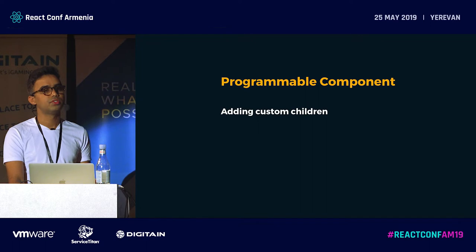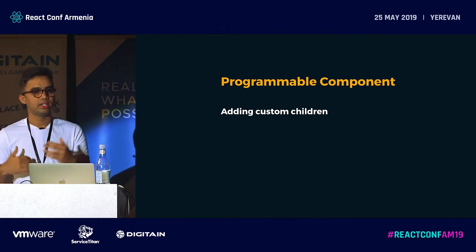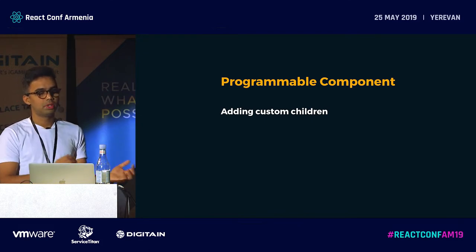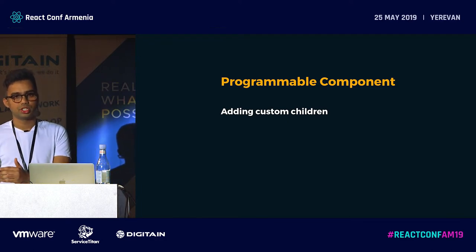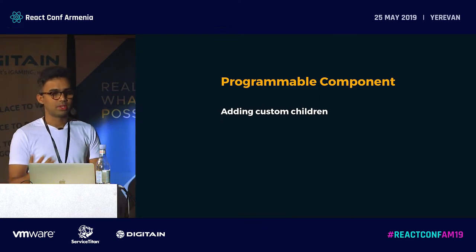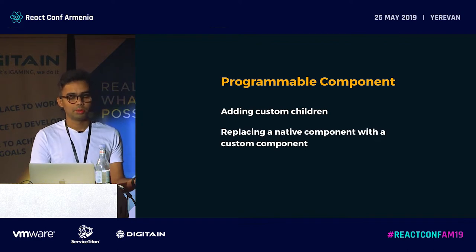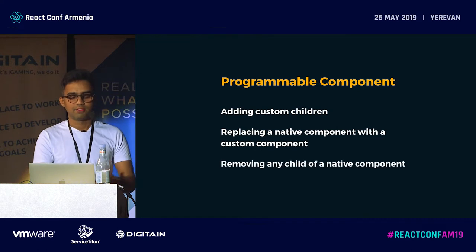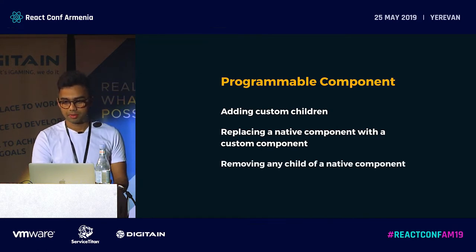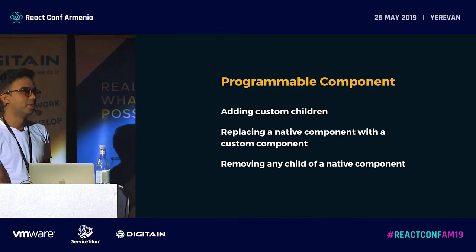There are three main actions you can perform on programmable components. First, adding custom children — at any given point in the tree, the customer should be able to add a custom child that behaves like it's part of the application, not like a third-party iframe. Second, replacing — if you don't like a component, you should be able to replace it with something else. Third, removing — if you don't want a component at all, you should be able to remove any child from a native component.